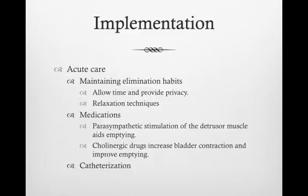In the acute care setting, it is often difficult for patients to void normally. Nurses can help by allowing the patient to have privacy and promoting relaxation techniques if the patient has difficulty voiding. Medications such as parasympathetic medications can stimulate the detrusor muscle and aid in bladder emptying, whereas cholinergic drugs increase bladder contraction and improve bladder emptying. For patients with severe problems with urinary elimination, catheterization may be indicated.